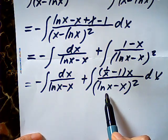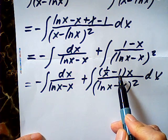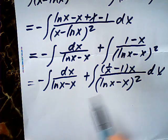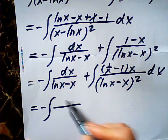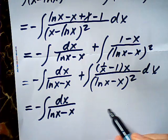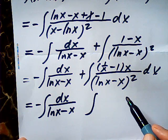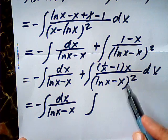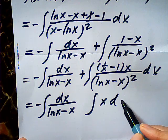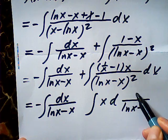Do you notice that the derivative of this one is this? So it means I can rewrite the integral as: this x is this one, and the other one becomes d of log x minus x.